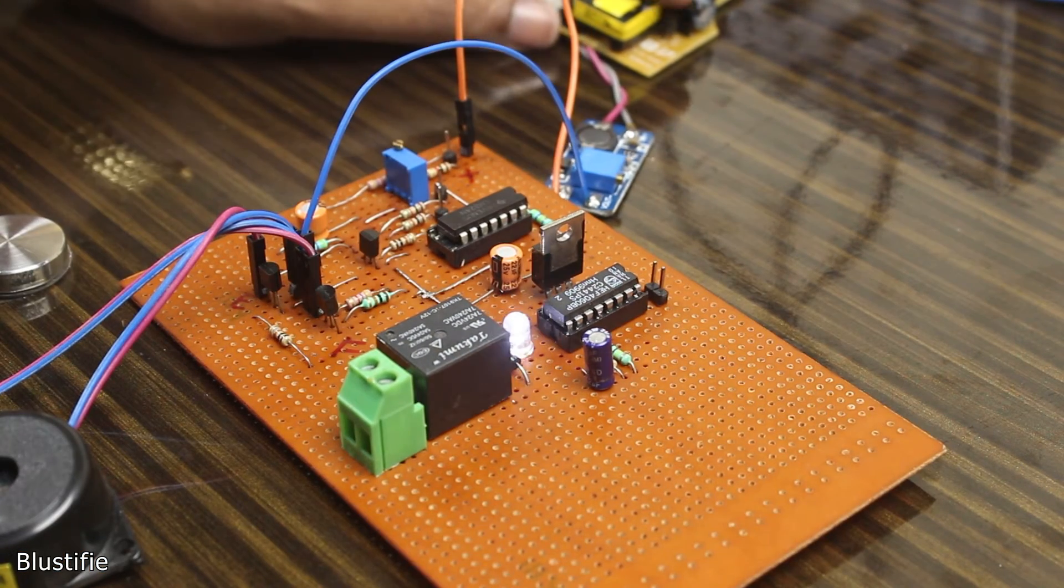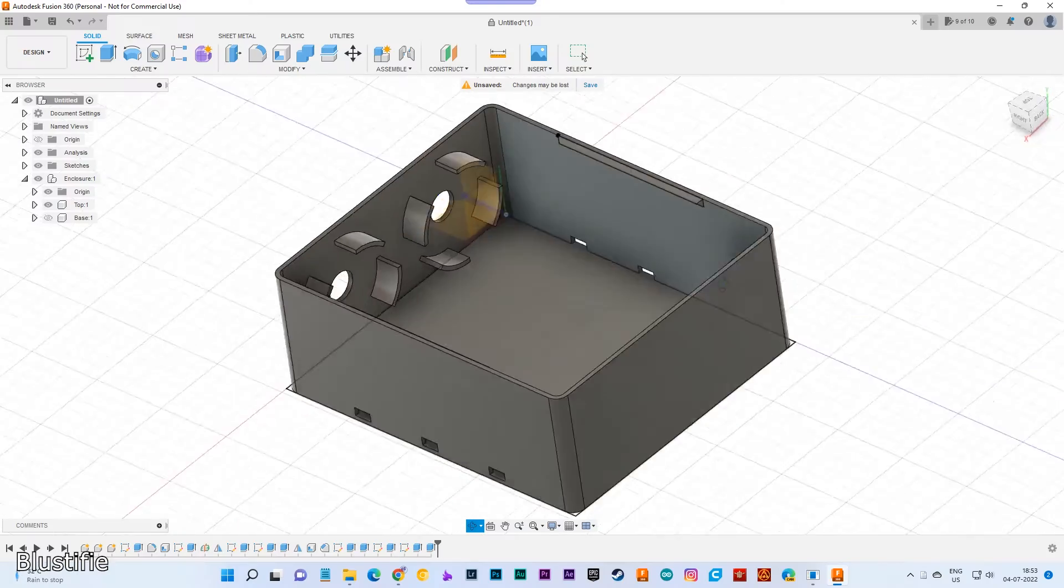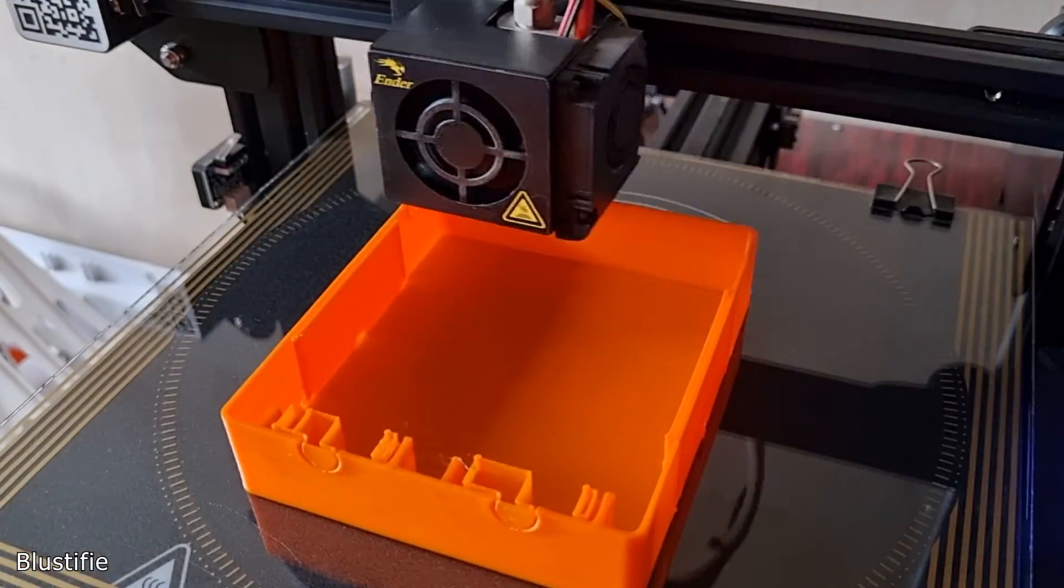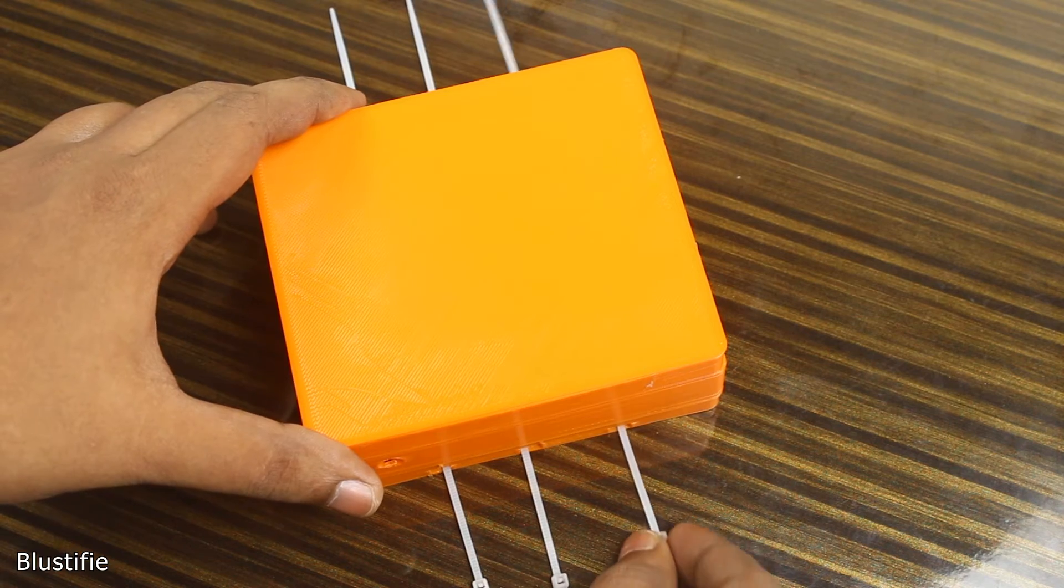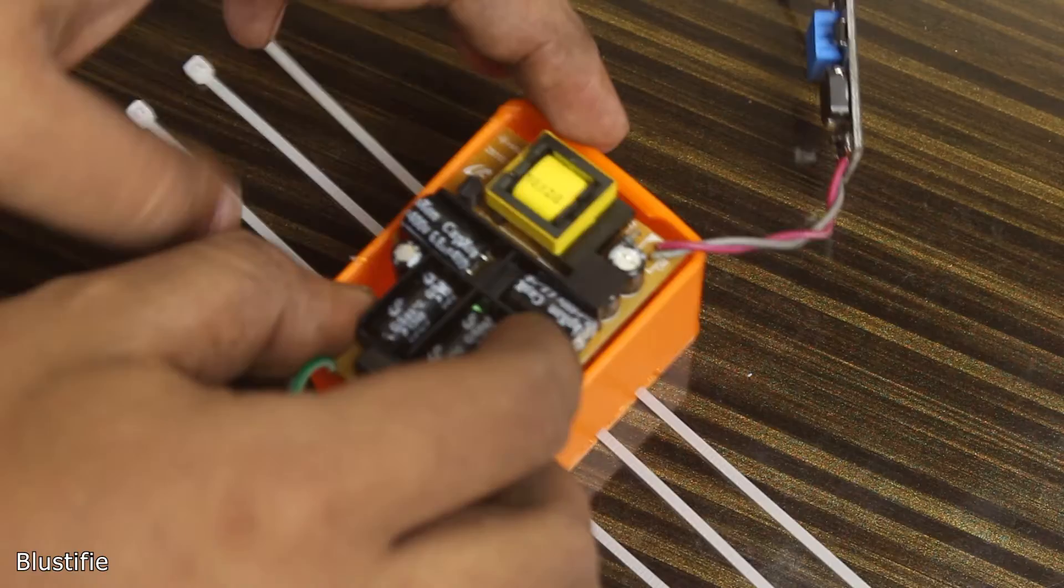Now of course, using such a naked circuit inside the water cooler isn't a good idea. So I have designed a 3D printed case with 3 mounting holes so that I can slip the zip ties through them to hold the case in the right place. I have also designed another small enclosure for the power supply and the boost converter.